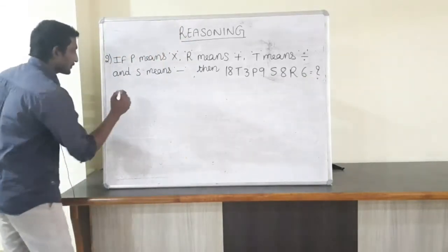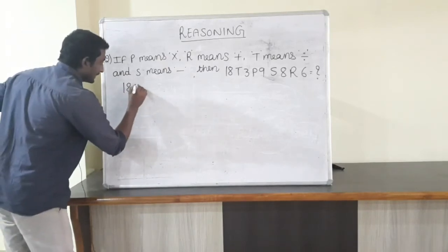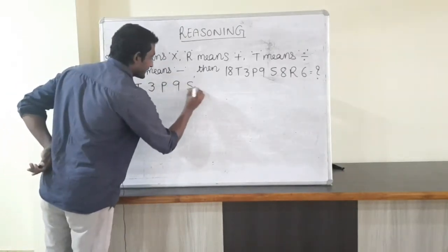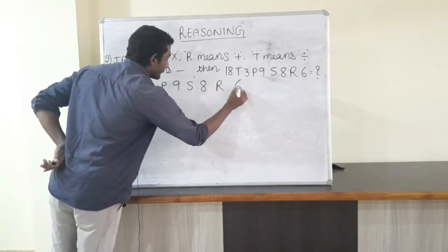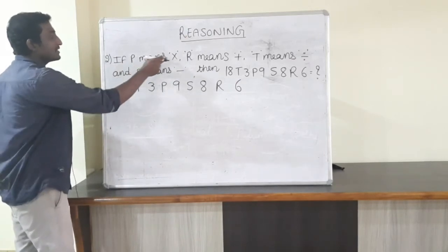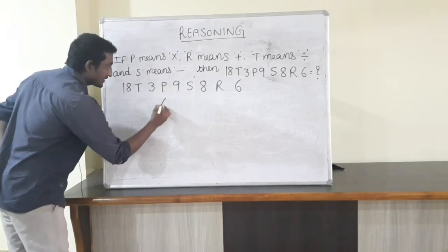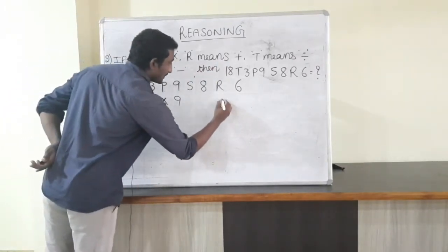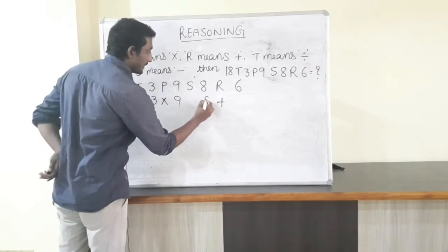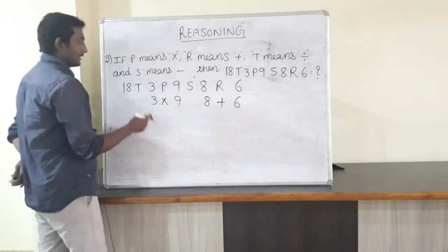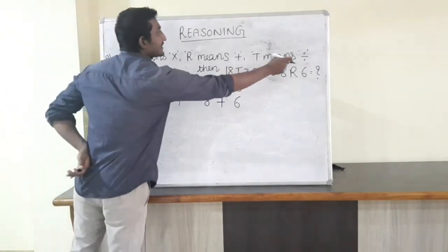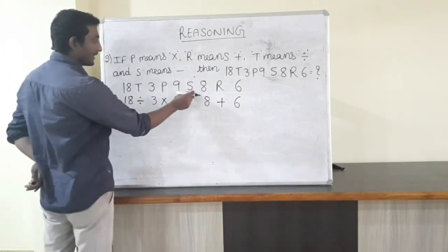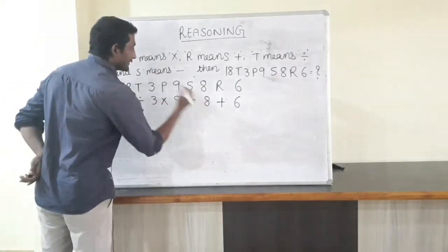See the question: 8 T 3 P 9 S 8 R 6. P means into, so replace P with into. R means plus, so replace R with plus. T means divided by, so replace T with divided by. S means minus, so replace S with minus. The expression becomes: 8 divided by 3 into 9 minus 8 plus 6.